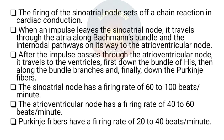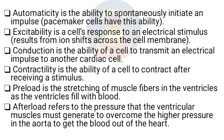The firing of the sinoatrial (SA) node sets off a chain reaction in the cardiac conduction system. When an impulse leaves the SA node, it travels through the atria along Bachmann's bundle and the internodal pathways to the AV node. After passing through the AV node, it travels to the ventricles down the bundle of His, along the bundle branches, and finally to the Purkinje fibers. The SA node fires at 60–100 beats per minute; the AV node at 40–60 beats per minute.